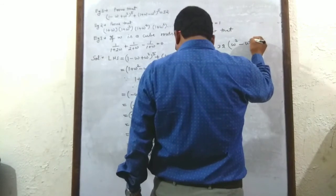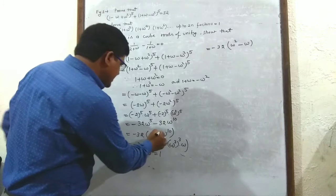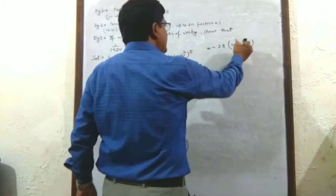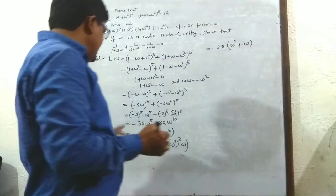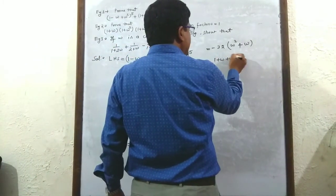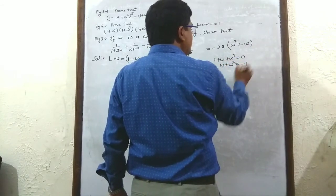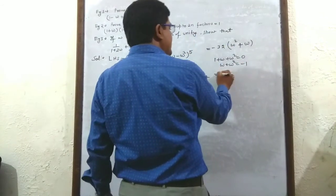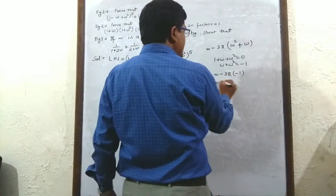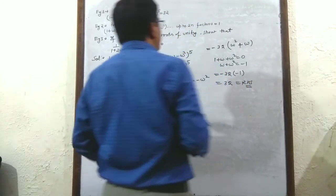Substituting: -32 × (-1) = 32 = right hand side. Hence proved.